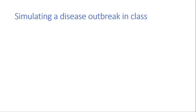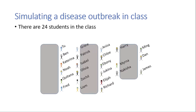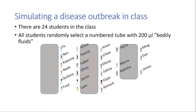Consider a disease outbreak simulation in class. Our class has 24 students, and all students will randomly select a numbered tube with 200 microliters of bodily fluids. In this case, we may pretend that we're working with hepatitis B. One student in this class has bodily fluids that are positive for hepatitis B.